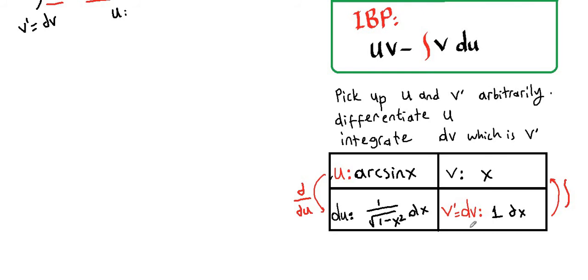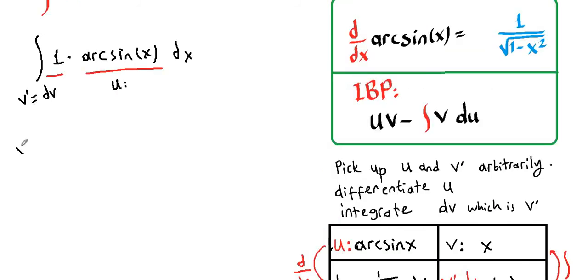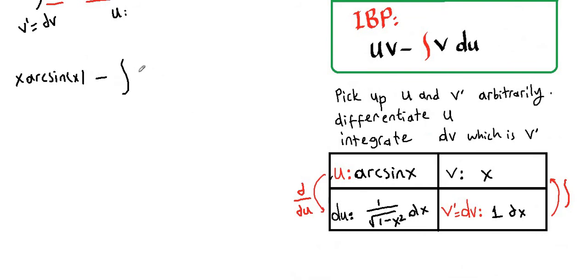Now, u times v, which is x times arcsin(x), minus integral of v du. v is x, du is 1 over square root of 1 minus x squared dx.